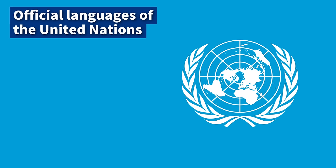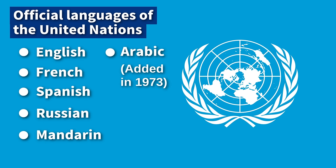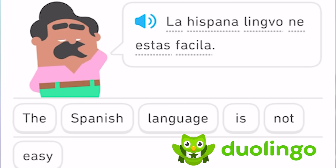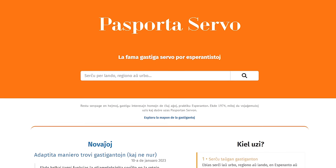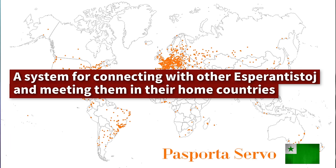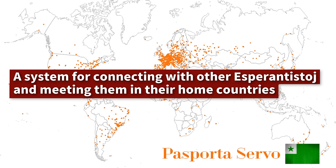After the war, the United Nations chose its six official languages: English, French, Spanish, Russian, Mandarin, and Arabic — notice that Esperanto isn't one of them. Esperanto is now highly unlikely to become a major international language, but its small community of enthusiasts has gotten a big boost with the rise of the internet. Websites like Lernu.net serve as valuable resources for learners, and Duolingo also has a course on Esperanto currently being used by over 300,000 people — compared to over 30 million for the Spanish course. Every Esperantisto knows Pasporta Servo (meaning Passport Service), a system for connecting with other Esperantistoj and meeting them in their home countries, speaking Esperanto together.